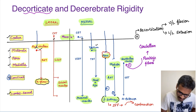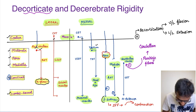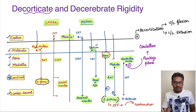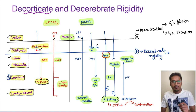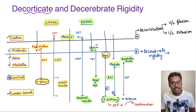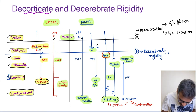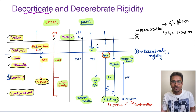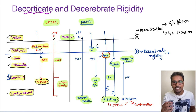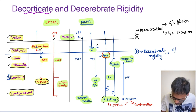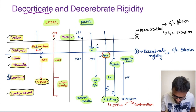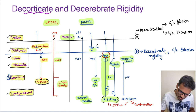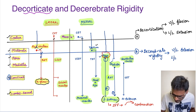Coming to the second lesion, we are going to draw it in the upper pontine region — let us name this B. This B is nothing but our decerebrate rigidity. In decerebrate rigidity, the corticospinal tract is cut as well as the red nucleus. Since the red nucleus is cut, the upper limb flexors are not activated. So the upper limb is going to go for extension, because only the extensors — the pontine reticulospinal tract — are active now. The lower limb condition is very similar because the pontine reticulospinal tract is still active and not damaged, so it continues to cause lower limb extension.